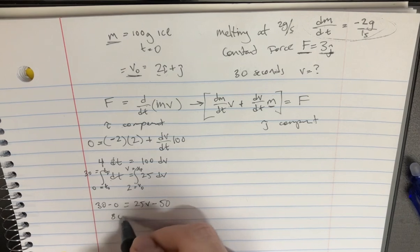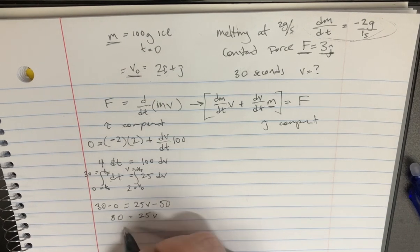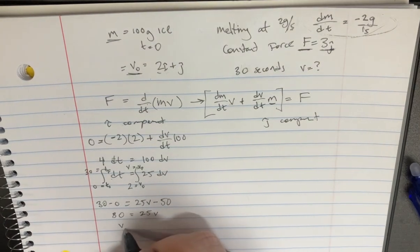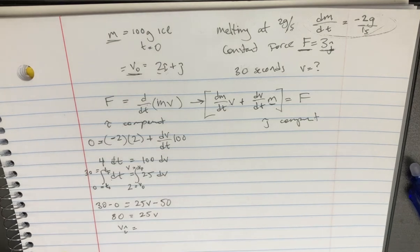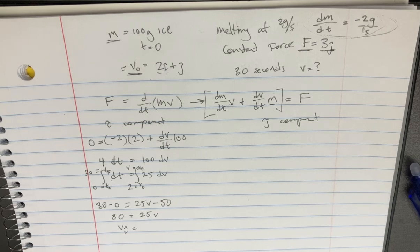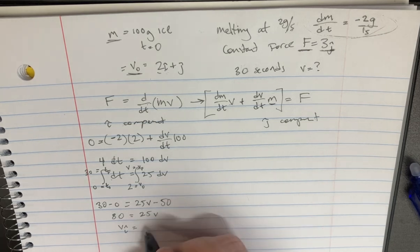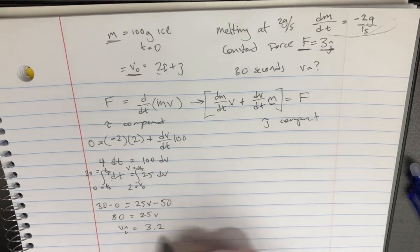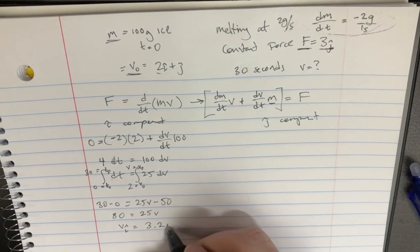Put that to the other side. We're going to get 80 equals 25v. And it turns out the i component of the velocity in the end is just 80 divided by 25, which is 3.2. So 3.2. And this is in the i direction.